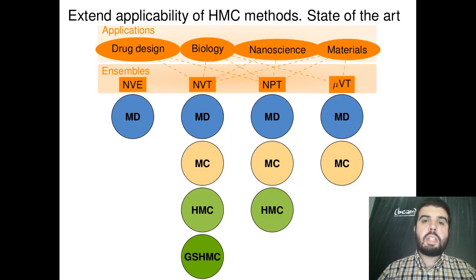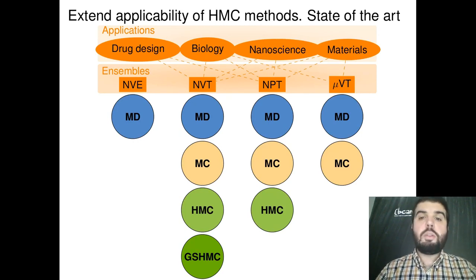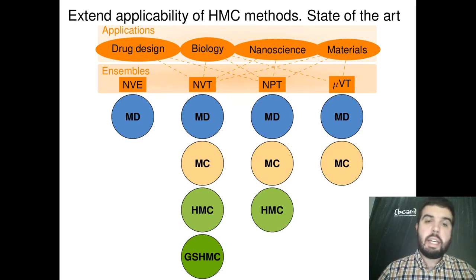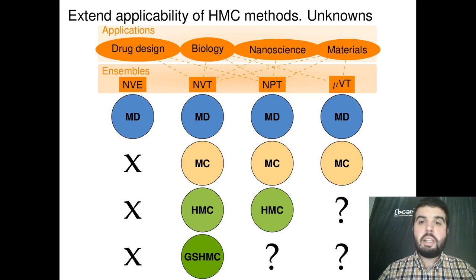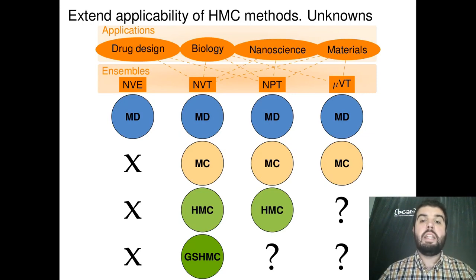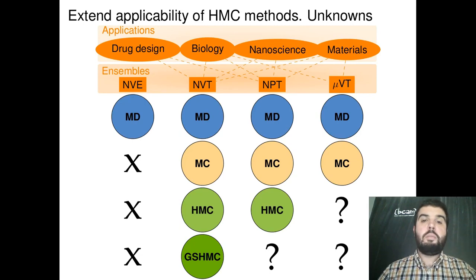We also wanted to work in the extension of the applicability of the hybrid Monte Carlo methods, meaning that we wanted to extend these methods to statistical ensembles where they were not applied before. Our targets were hybrid Monte Carlo for the grand canonical ensemble and GSHMC for the NPT, or isobaric-isothermal, ensemble and the grand canonical ensemble. We did not want to work in the microcanonical or NVE ensemble because the applications are not interesting for real-life problems.